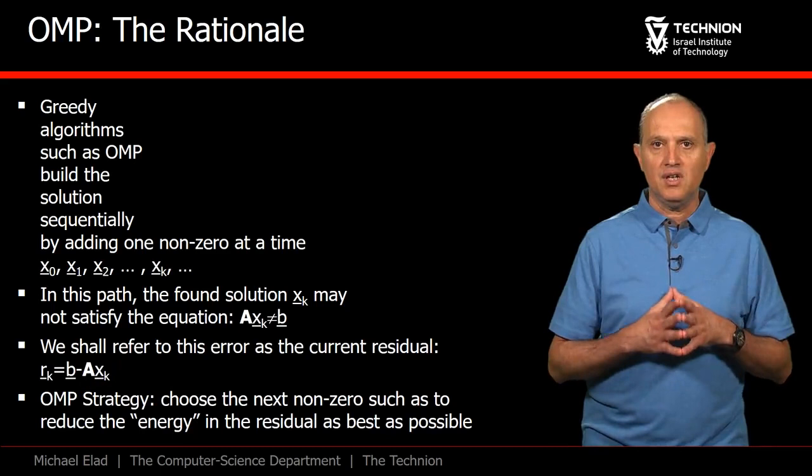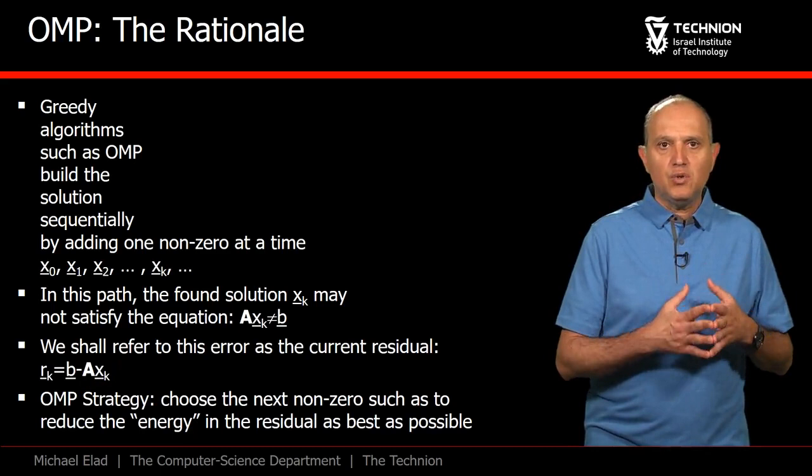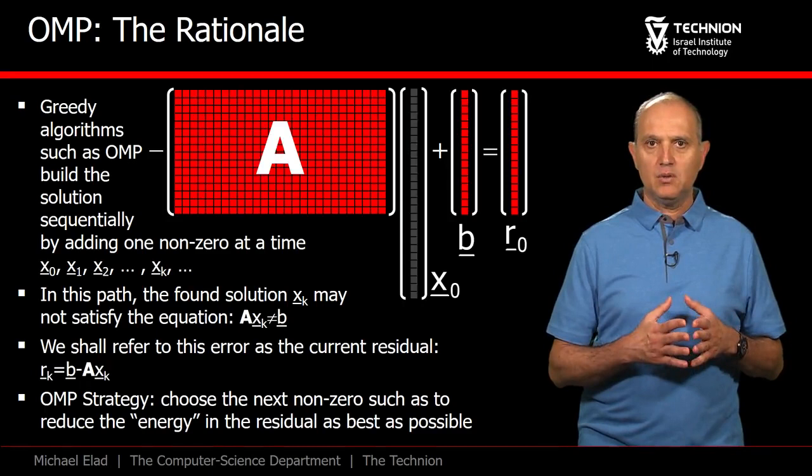The main point in the OMP is to use the residual in each step in order to choose the next atom. This will be done such that the chosen atom leads to a maximal reduction of the residual energy.